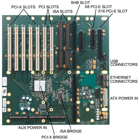Early microcomputer systems like the Altair 8800 used a backplane for the processor and expansion cards. Backplanes are normally used in preference to cables because of their greater reliability. In a cabled system, the cables need to be flexed every time that a card is added or removed from the system. This flexing eventually causes mechanical failures. A backplane does not suffer from this problem, so its service life is limited only by the longevity of its connectors.